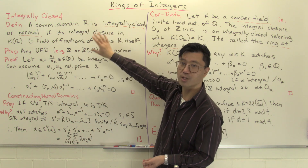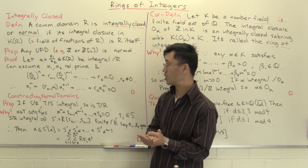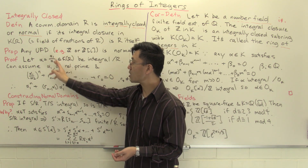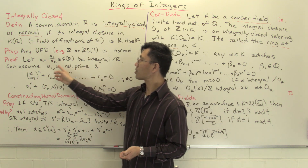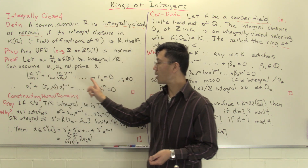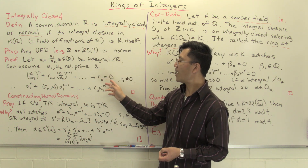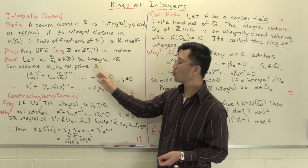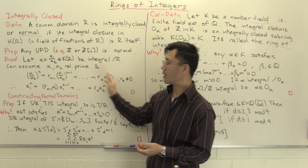We want to show that this contains all the integral elements. The denominator alpha₂ we can take to not be a unit. Since we're in a unique factorization domain, we can assume alpha₁ and alpha₂ are relatively prime. Also, this alpha is integral, so it satisfies some monic polynomial whose coefficients Rₙ₋₁ to R₀ are inside the ring R. And we can assume that R₀ is not zero — if it is zero, we can pull out a factor and get a lower degree monic equation.